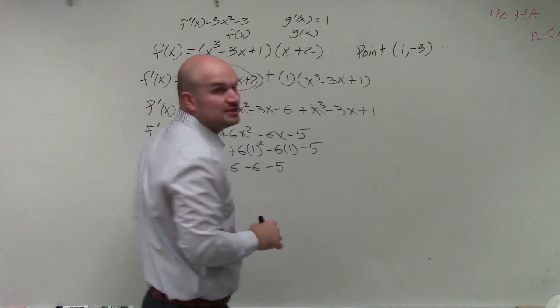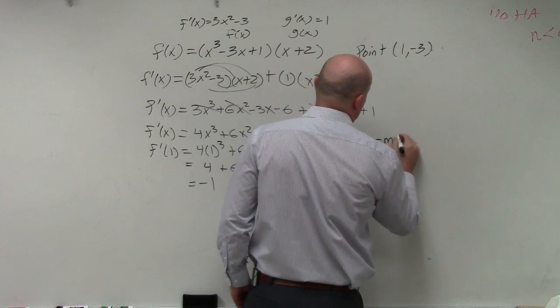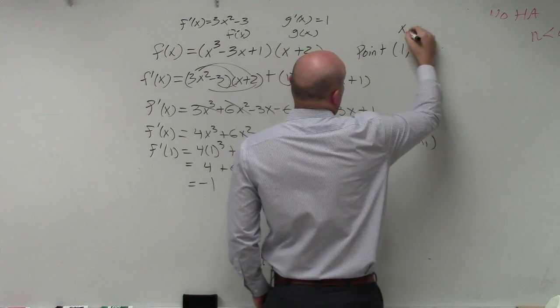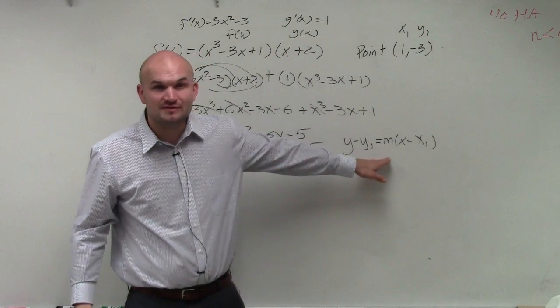So remember, writing the equation of the line: y minus y1 equals m times x minus x1. Well, x1, y1, those are two points. And do we now know what the value of the slope is?